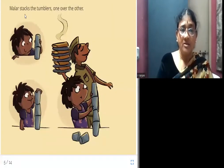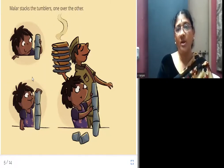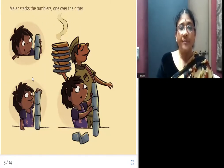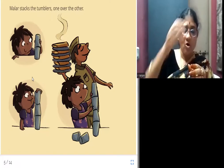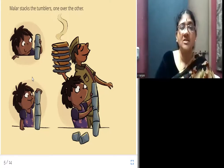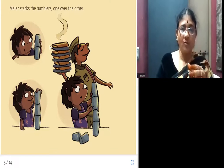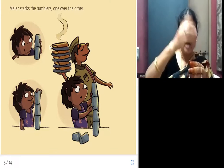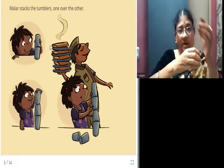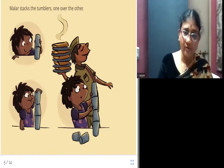Malar stacks the tumblers one over the other. Stacking means placing one tumbler on top of the other. She places one tumbler, then another on top of it, and continues going on stacking them up.